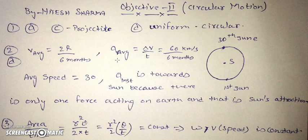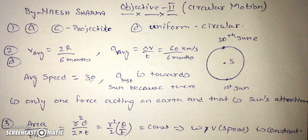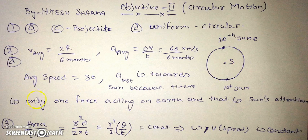Talking about average acceleration, it will be 2 times the speed because the velocity will just reverse in direction. As the magnitude remains constant — it is given in the question — the change in velocity will be 60 km per second and the time is again 6 months. Average speed is obviously 30 km per second, as given in the question. Instantaneous acceleration is toward the Sun because the only force acting on the Earth is gravitational attraction from the Sun. So the only correct option is D.